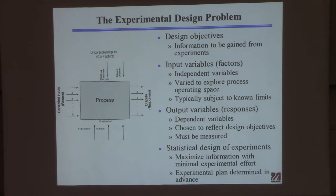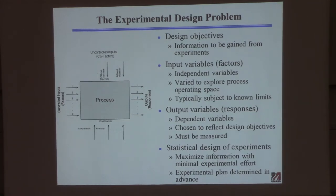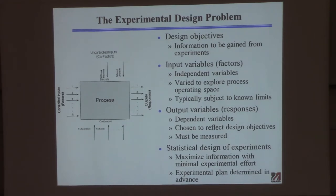About half of you will go into the chemical industry. You'll find some things are really easy to measure — temperature, pressure, flow, composition — and some things are hard to measure, like microstructure of a carbon nanotube or molecular weight distribution. The whole idea behind statistical design of experiments is to get as much information as possible from as few experiments as you can.